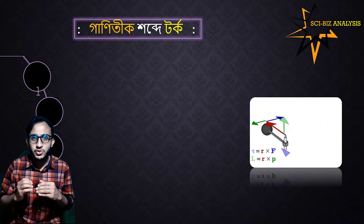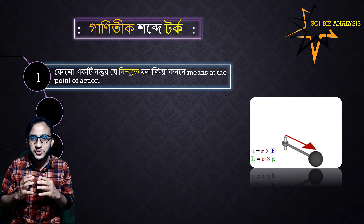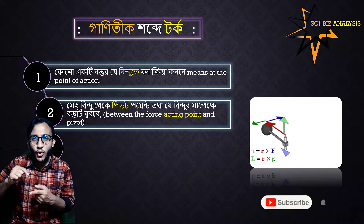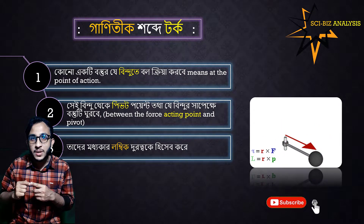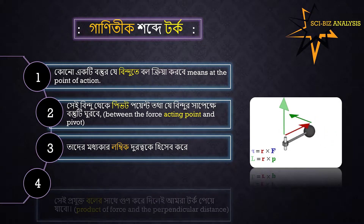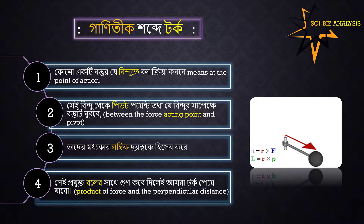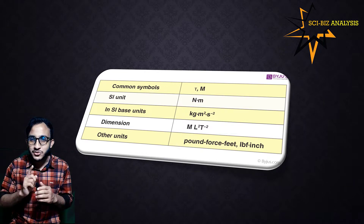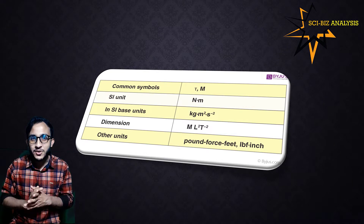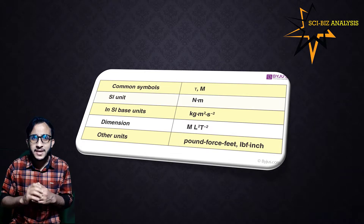In this case, the torque is the same as the right angle. The pivot point means that the force acting point and the pivot — between the force acting point and the pivot — is the most important part. The force is used to create the torque. Torque is a product of force and perpendicular distance. This is related to the basic symbol, unit, and dimension. You can stop the video and watch over this.